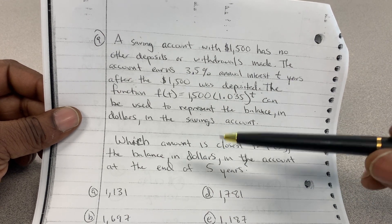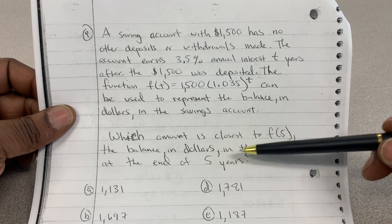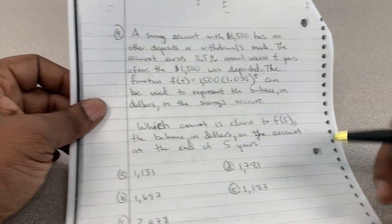Which amount is the closest to f(5), the balance in dollars in the account at the end of five years? So this f(5) plays a major factor.